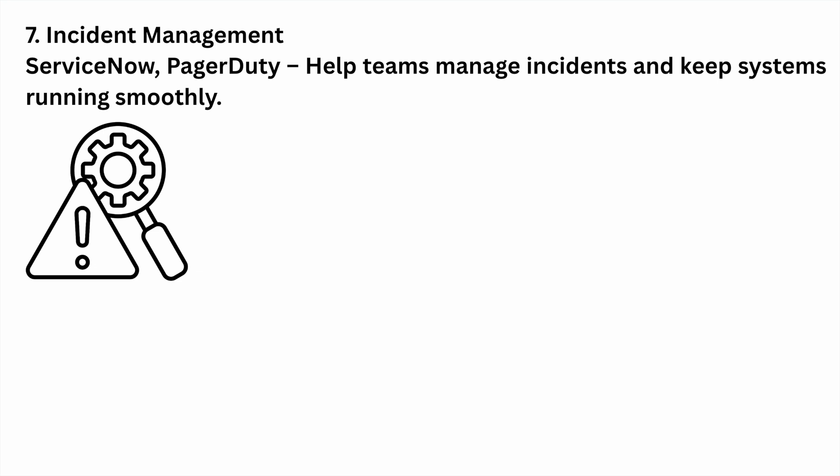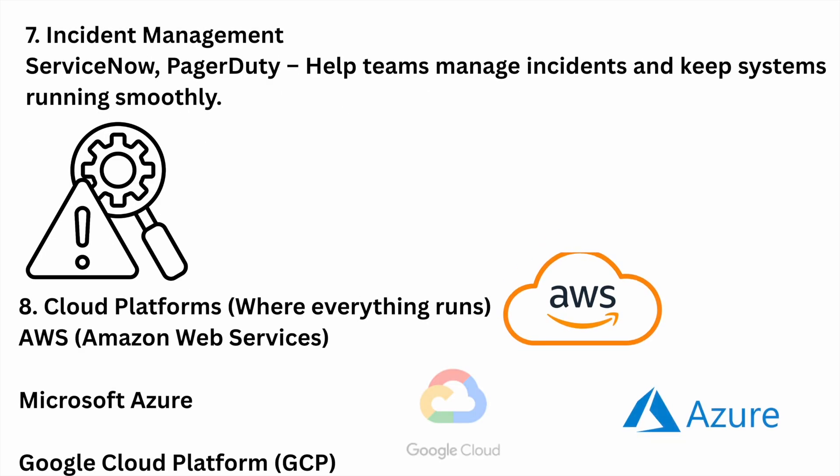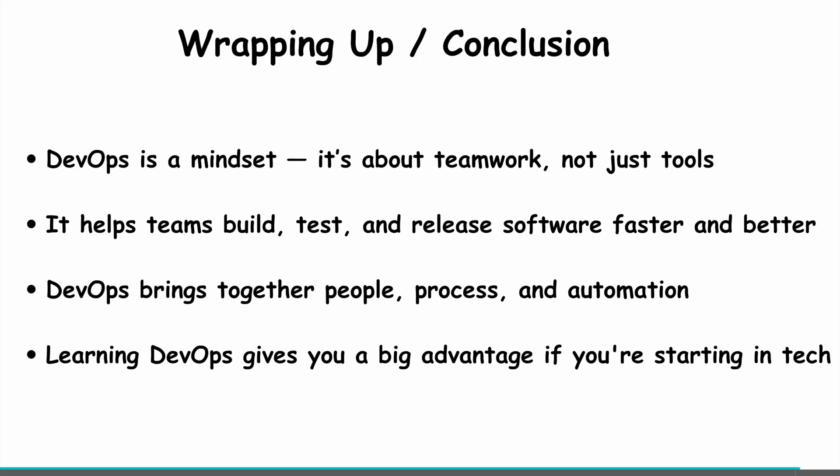And the next one is incident management. These tools help manage incidents and keep systems running smoothly — for example ServiceNow. And the last one is cloud platforms, where everything runs. DevOps relies heavily on the cloud to run applications, store data, and scale resources as needed — for example AWS, Azure, and GCP. These platforms provide tools for computing, storage, databases, and networking, and even have DevOps built-in services.